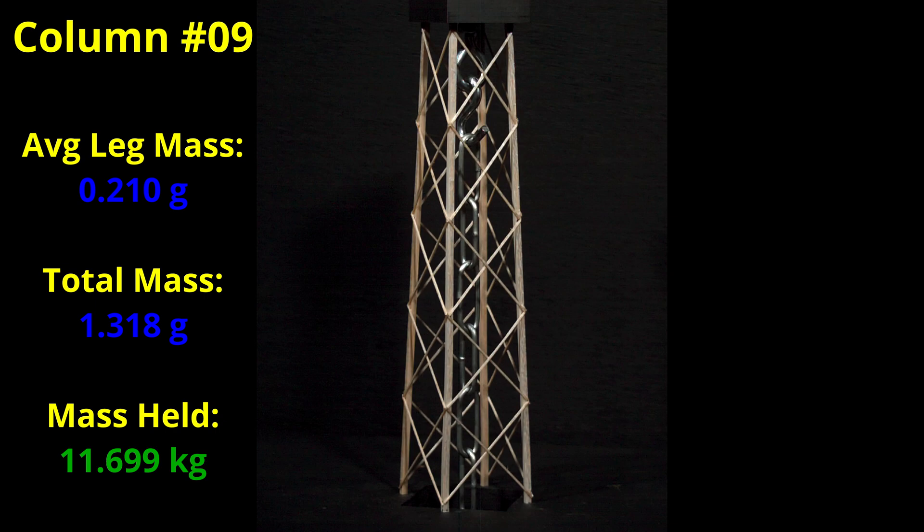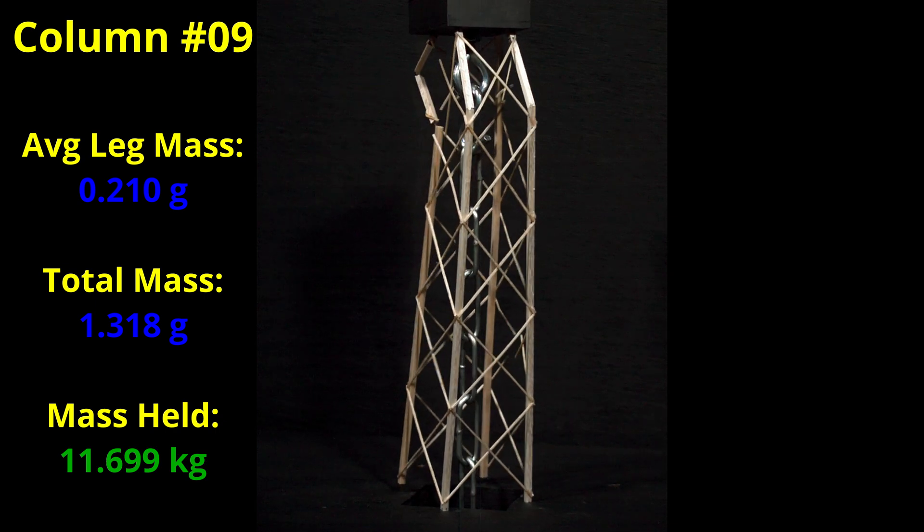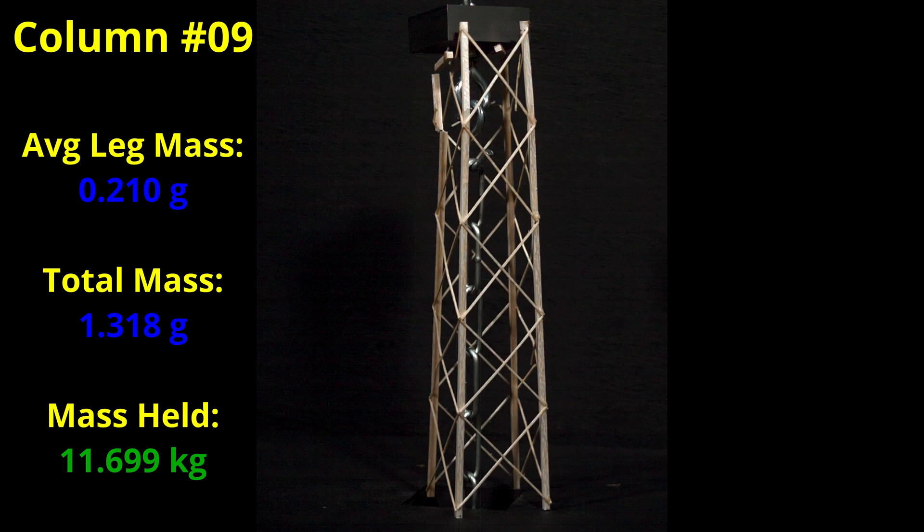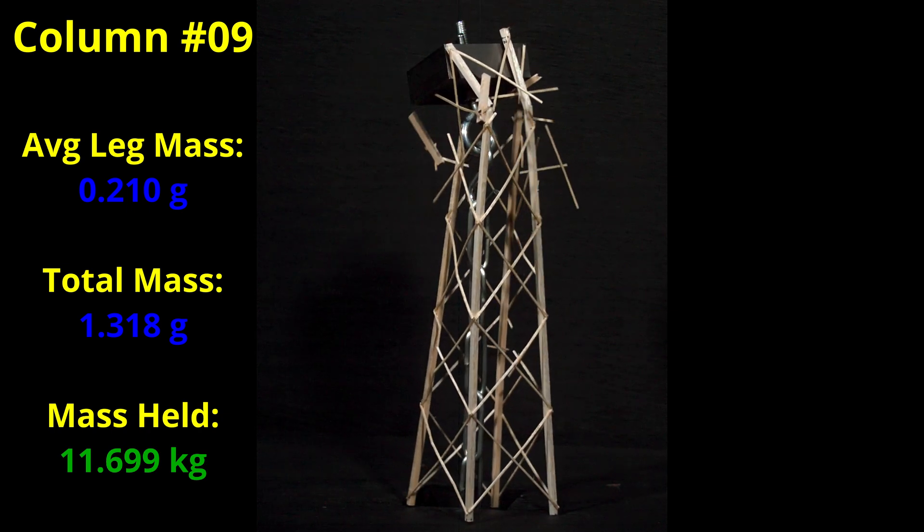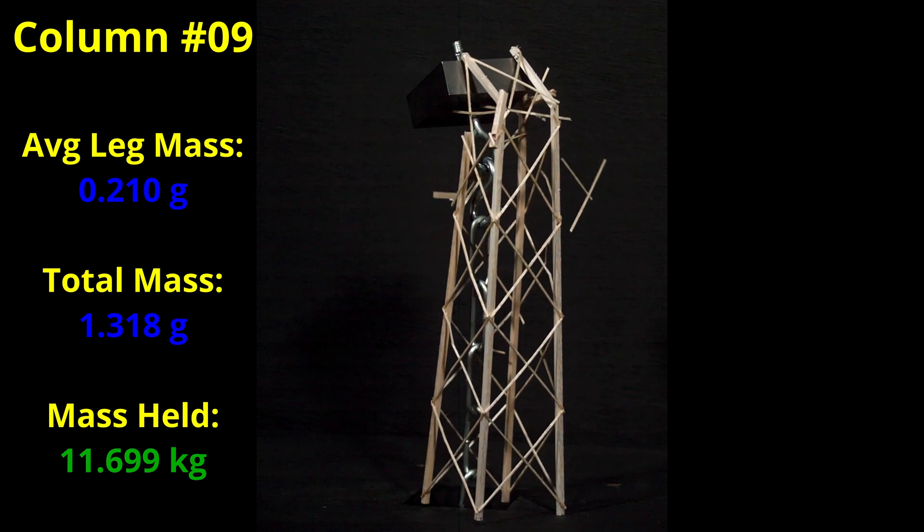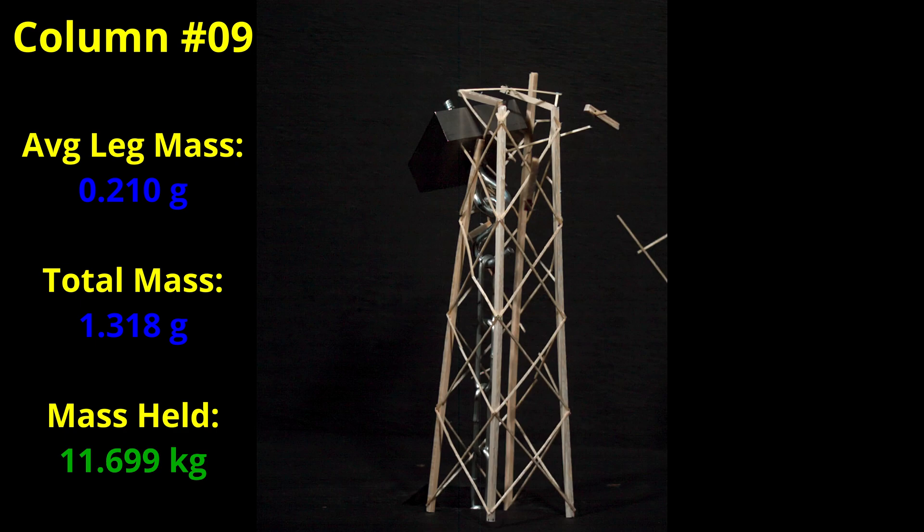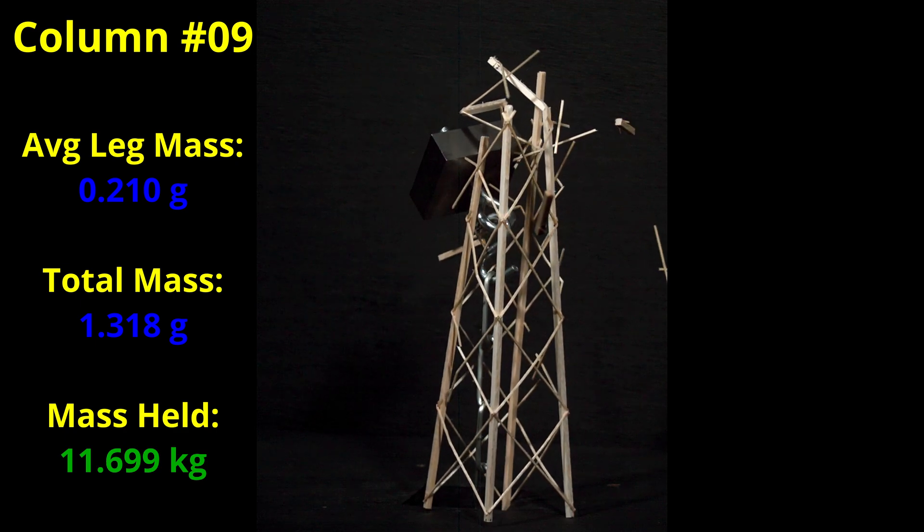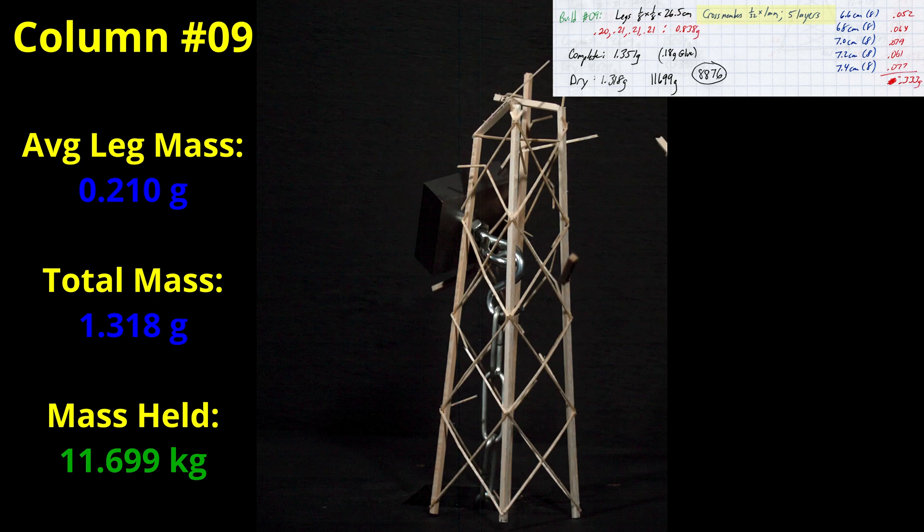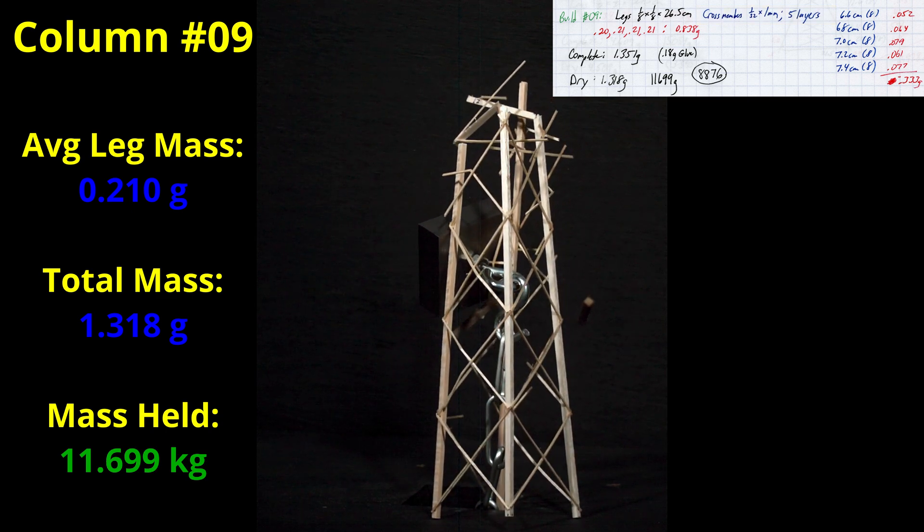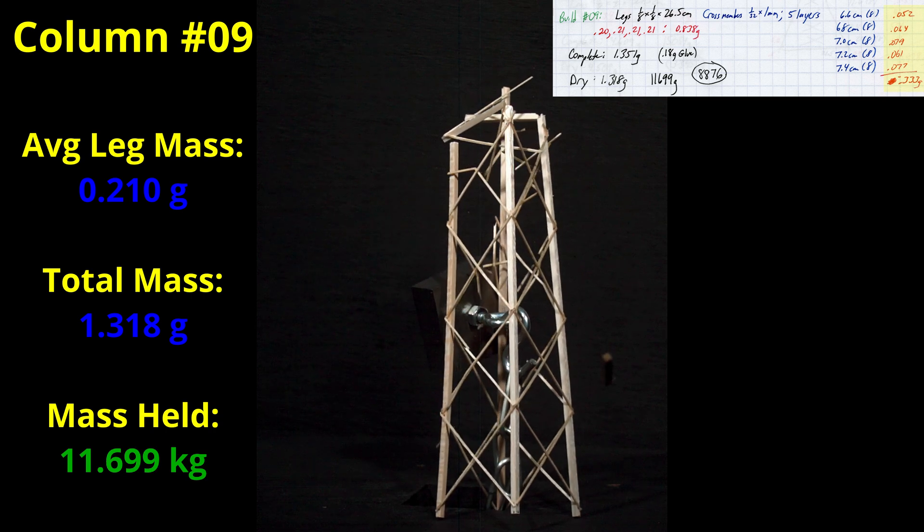Build number 9 was the first build where I started to think about building a balanced column, that is matching the very light leg mass with very light cross members. Here I chose an average leg mass of 0.210 grams. That was on the light side of the initial builds, but at least one of those builds held over 15 kilograms, so I wanted to see what would happen if I matched it with extremely light cross bracing. I used 1.32 by 1mm for the cross bracing material and the total mass of all the bracing was only 0.333 grams.